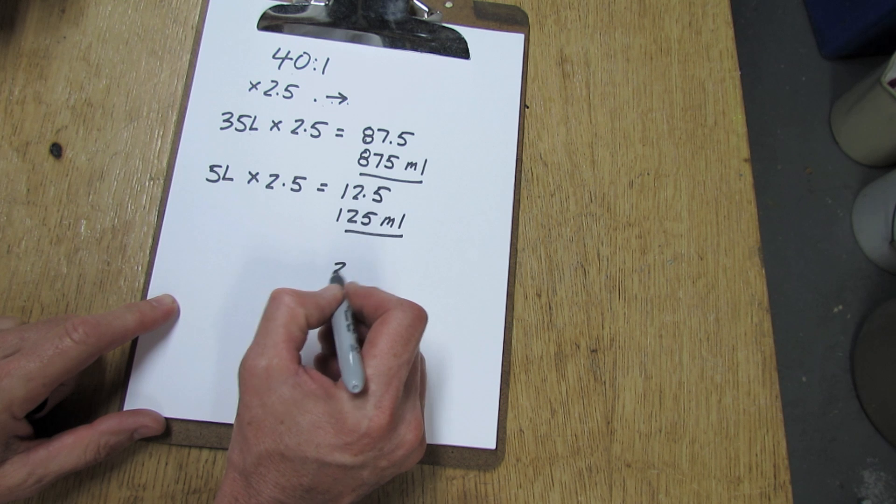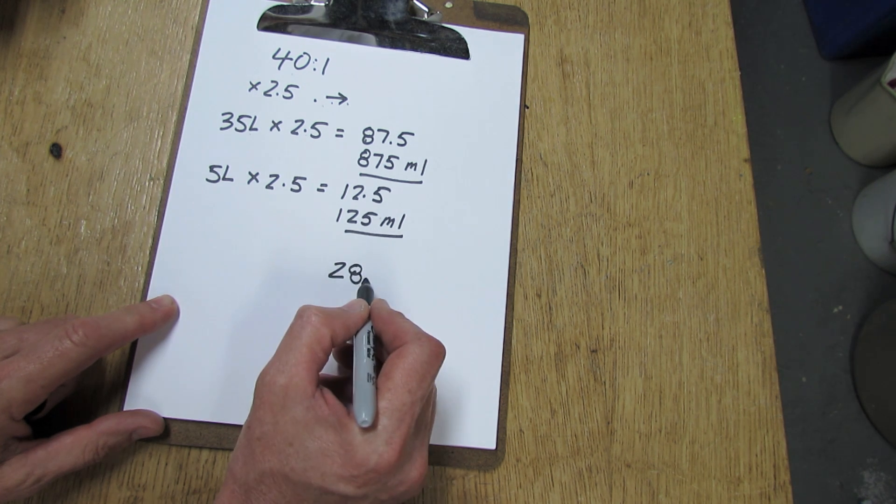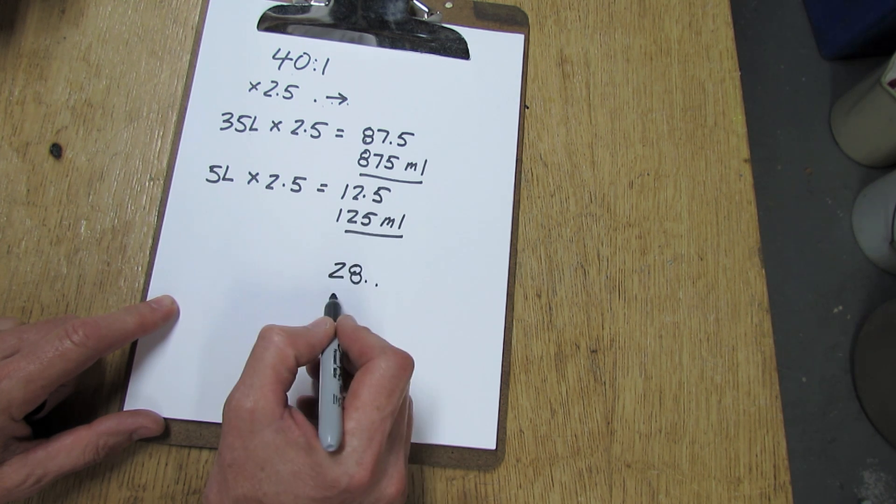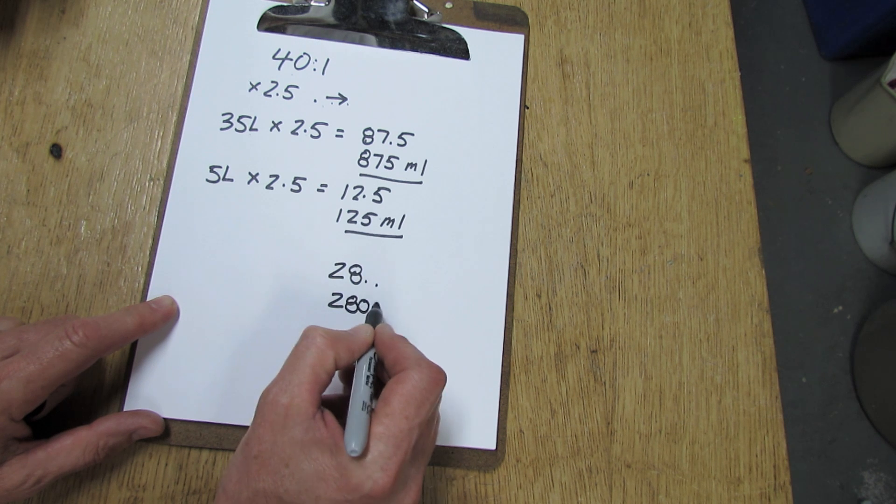Now if you happen to end up with a number like 28, the decimal would normally be there. Just move it over one and it would be 280 milliliters.